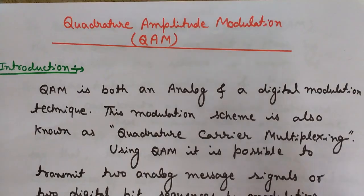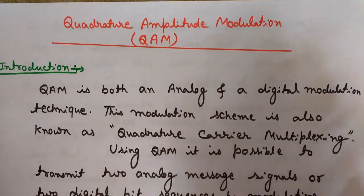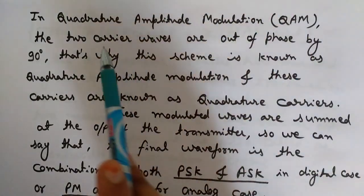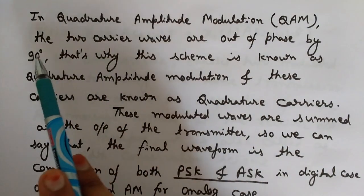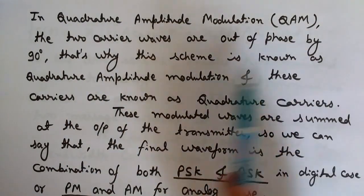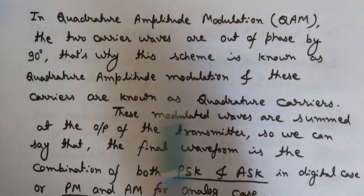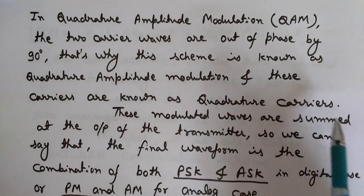Why is this known as Quadrature Amplitude Modulation? What is the meaning of 'quadrature' here? In QAM, the two carrier waves are out of phase by 90 degrees — that's why this scheme is known as Quadrature Amplitude Modulation, and these carriers are known as quadrature carriers.